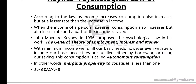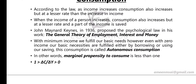Keynes also says that with minimum income we fulfill our basic needs. However, even with zero income our basic necessities are fulfilled either by borrowing or using our savings. This consumption at zero income is called autonomous consumption.